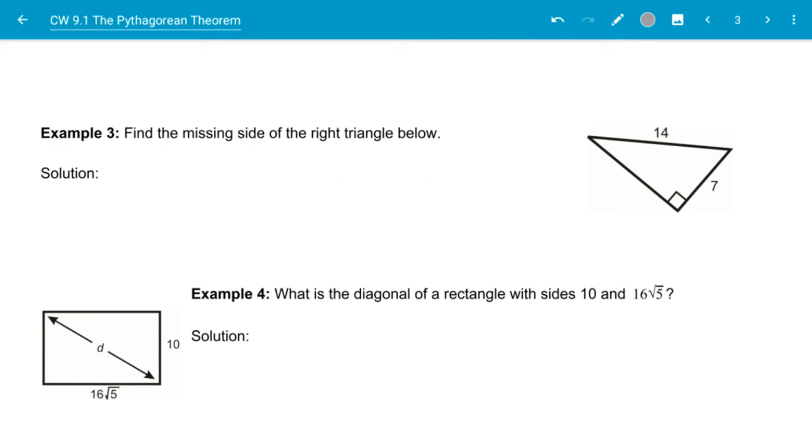In example number three, we're going to find the missing side of a triangle. I'm going to label this A. And again, we're going to use the Pythagorean theorem. So I'm going to have A squared plus B squared is equal to C squared.